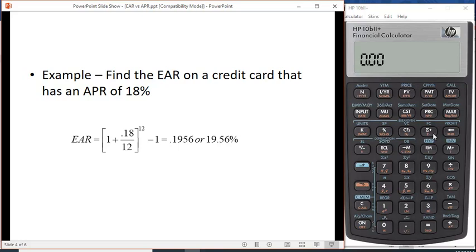On this time value of money row here, if you've done time value of money using the financial calculator, below happen to be the items you're going to use to calculate effective and annual percentage rate. Under the I/YR is NOM%, nominal percentage—that's the APR. Underneath the PV is EFF%, that's the effective rate, and underneath the PMT is P/YR, periods per year.